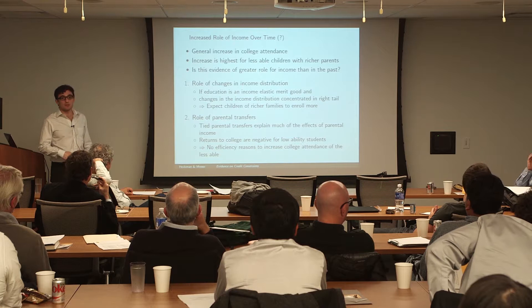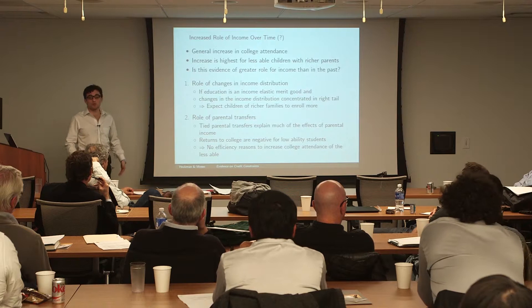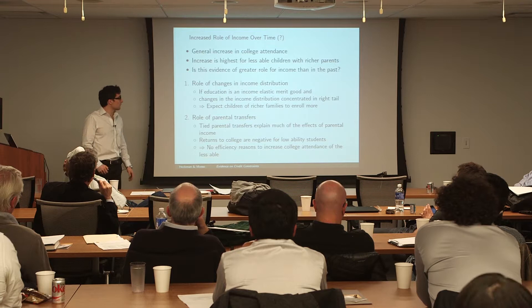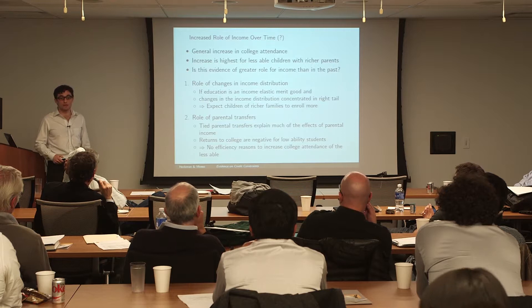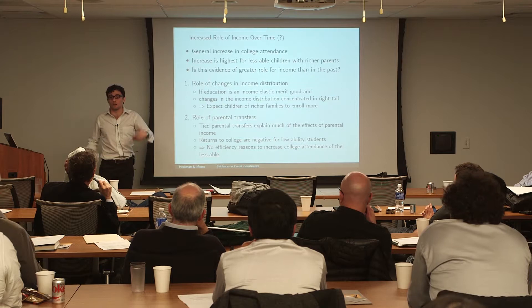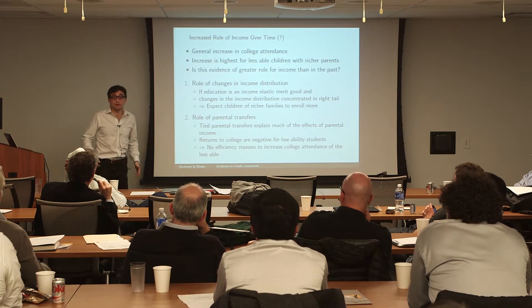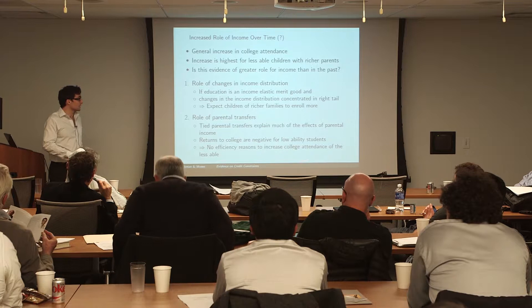The combination of these findings makes it unclear how much of an efficiency problem there is in observing this income gradient. We know from other studies that for low-ability students, the real return to college once costs are taken into account is very low, if not even negative. So it is not clear that a planner aiming to maximize output in society would have an efficiency reason to necessarily increase college attendance for the less able.